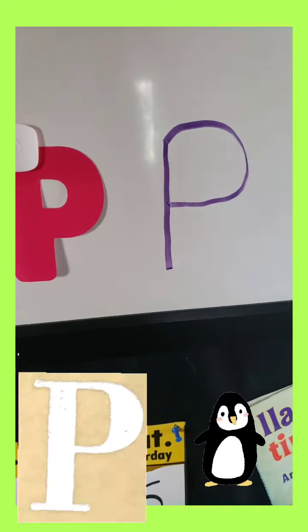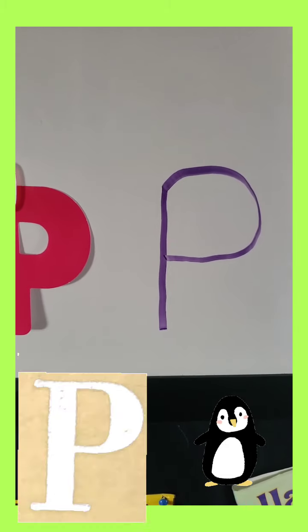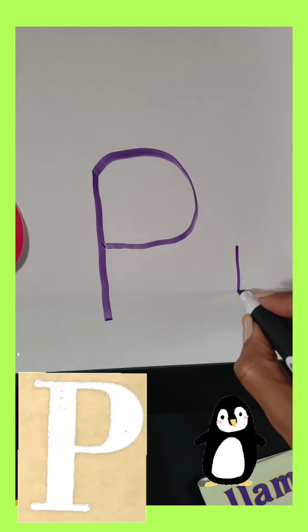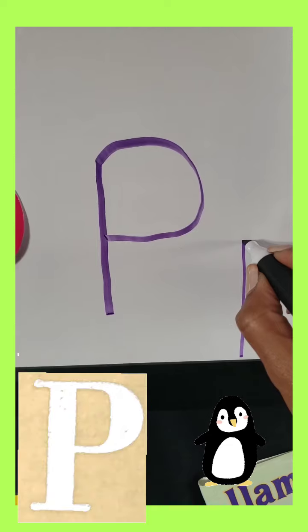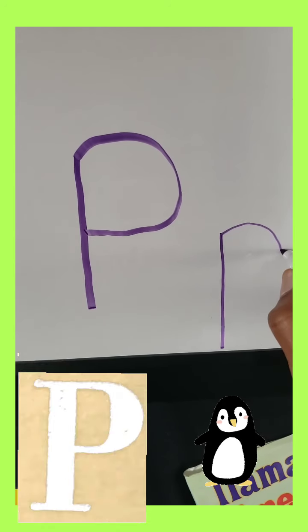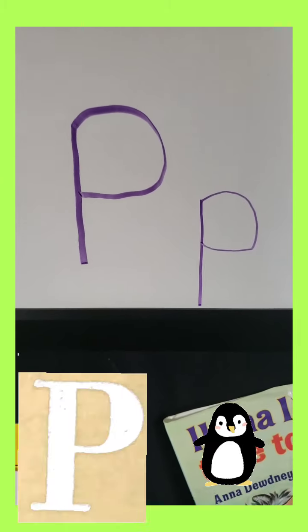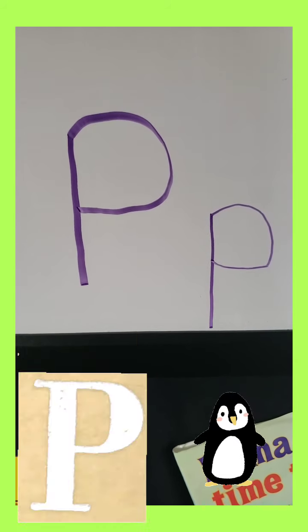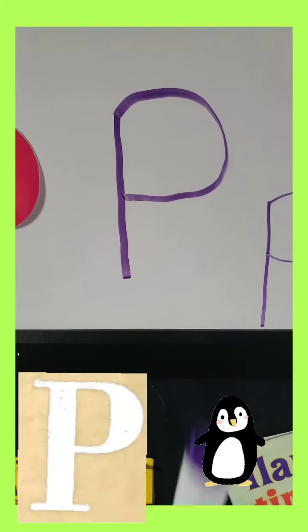And guess what? Just like C, we're going to do the little P the same way as the capital letter. Same thing — vertical line going down, and then you come back up to the top here, and you're going to curve your line around like a circle, and stop. So you have big P and little P. What sound does P make? P, like for purple, like the marker Miss Leah is using.